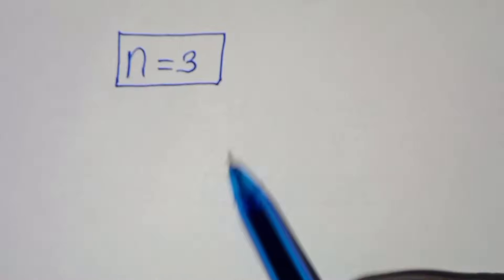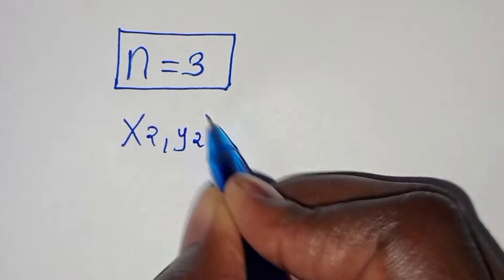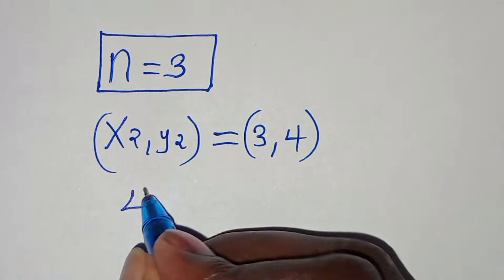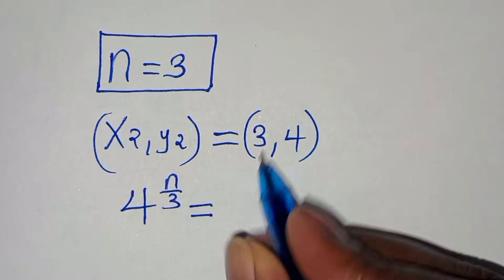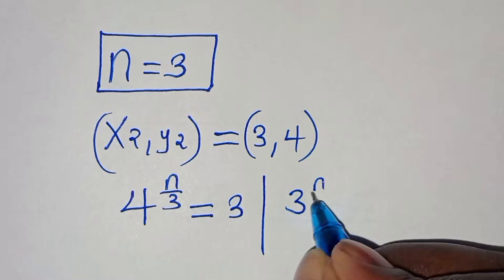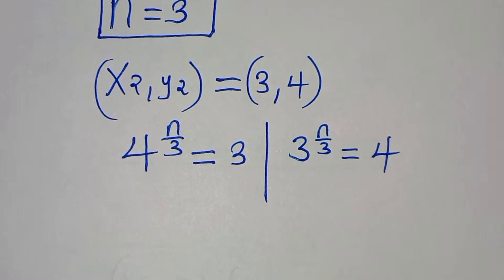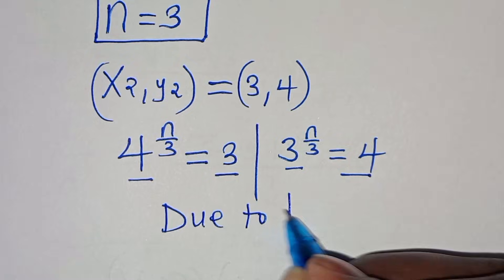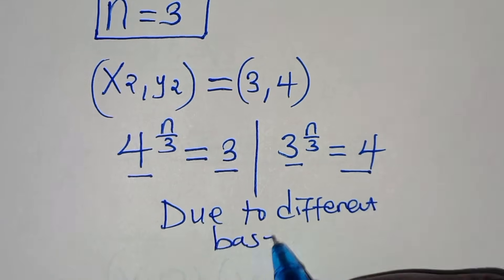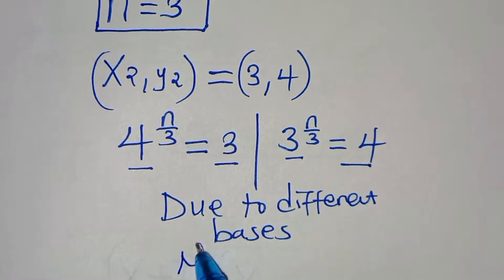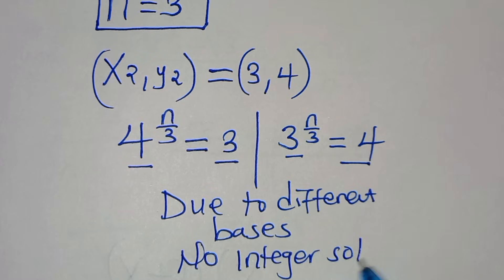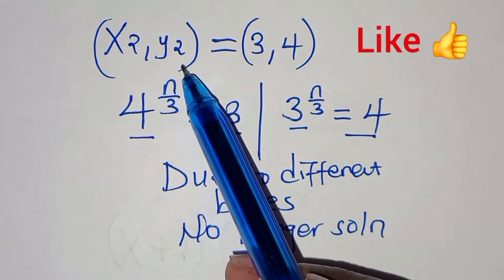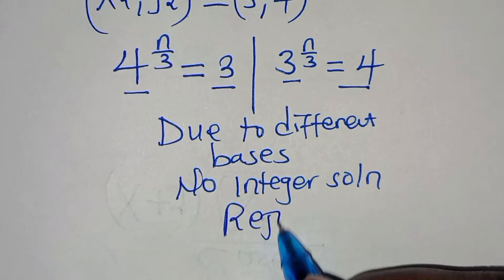For the second solution set (x₂, y₂) = (3, 4): we would need 4^(n/3) = 3 and 3^(n/3) = 4. Due to different bases, there is no integer solution obtainable from this set. Therefore (x₂, y₂) = (3, 4) is rejected.